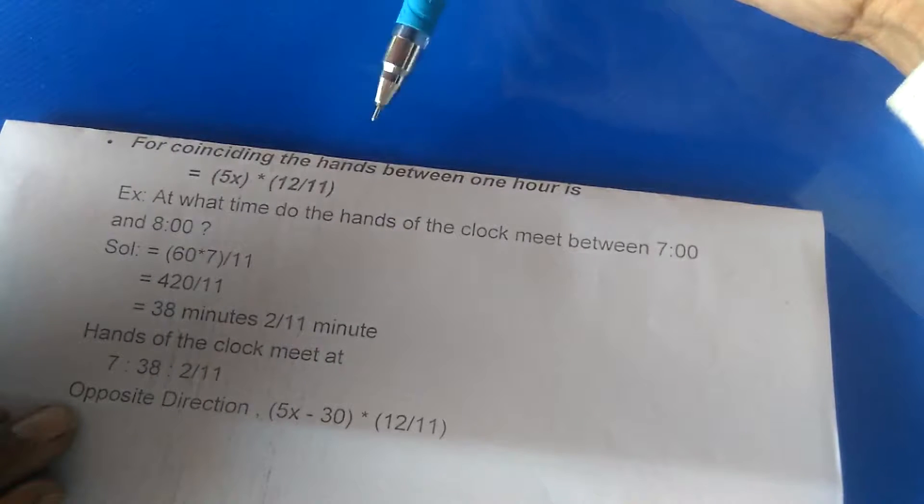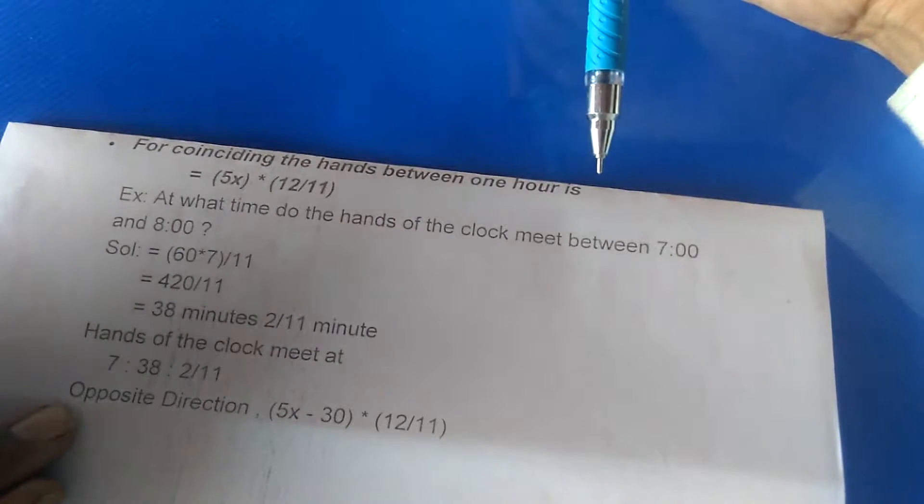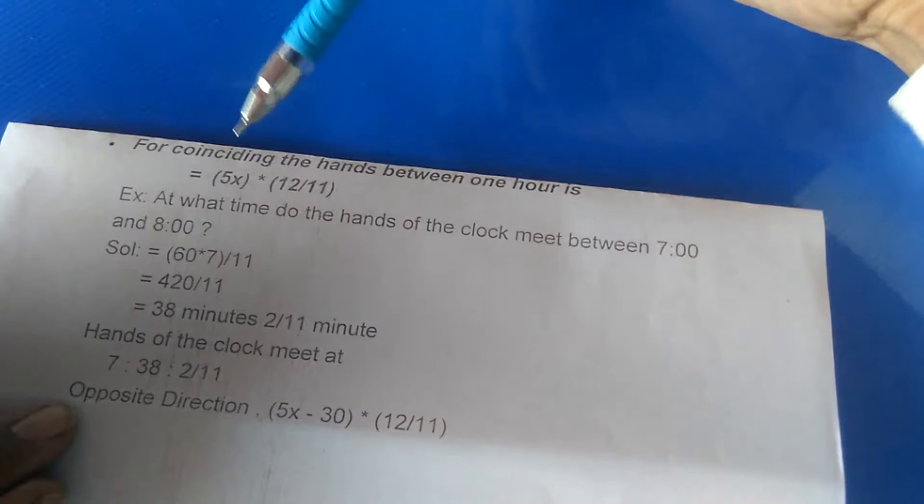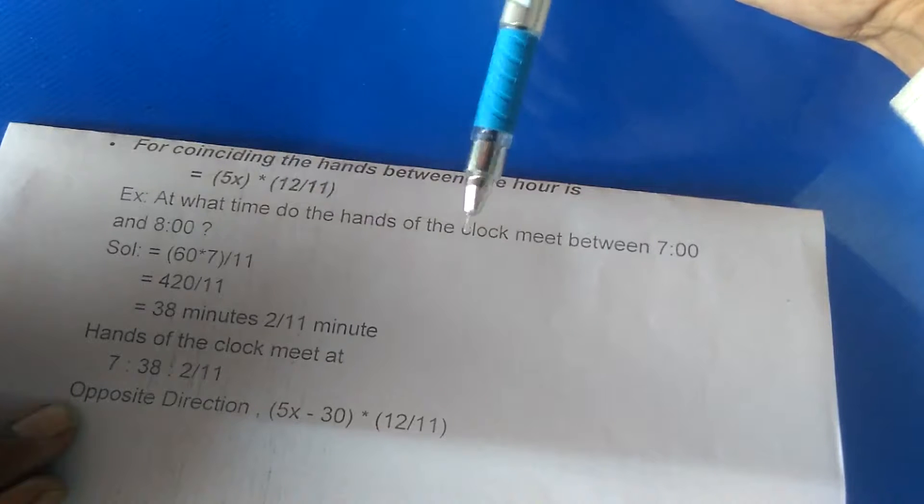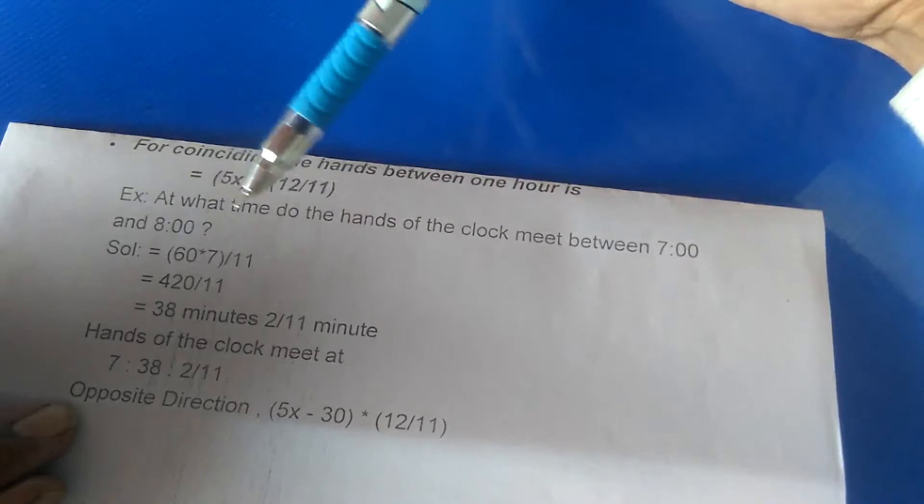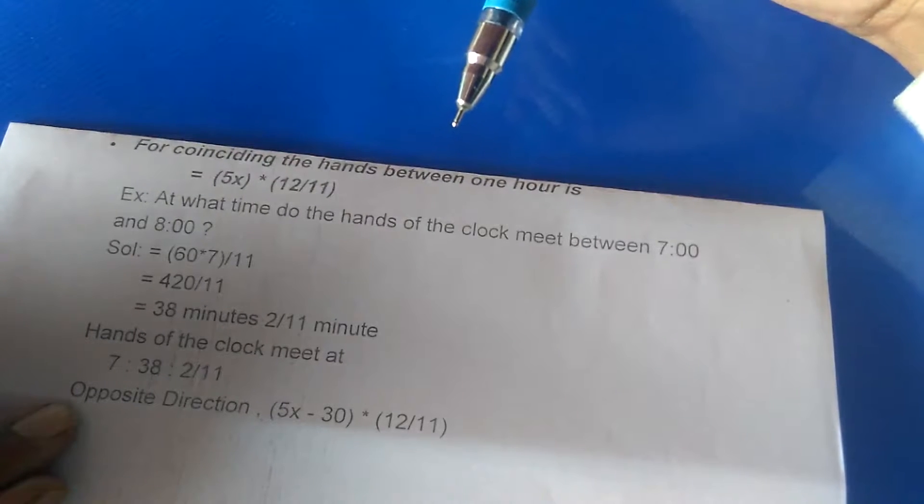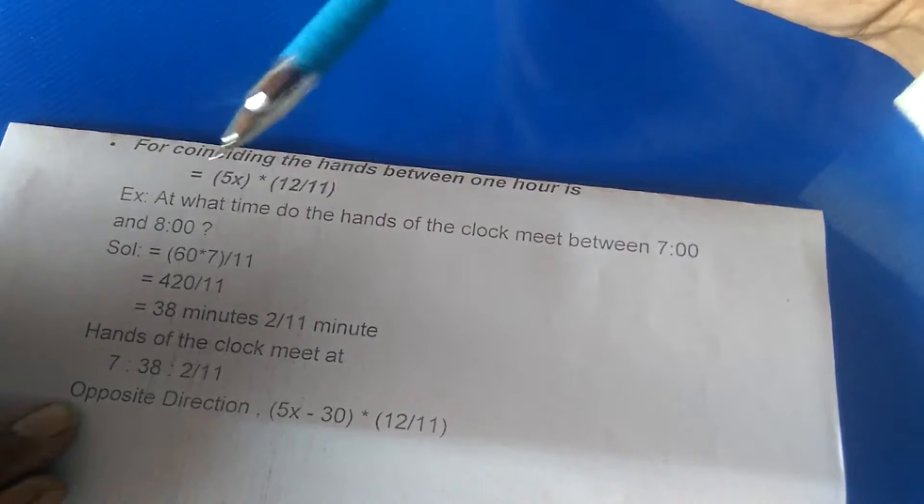One more: for coinciding hands between one hour, the formula is 5x times 12 over 11. At what time do the hands of a clock meet between 7 and 8? Here x is 7, just place the value.